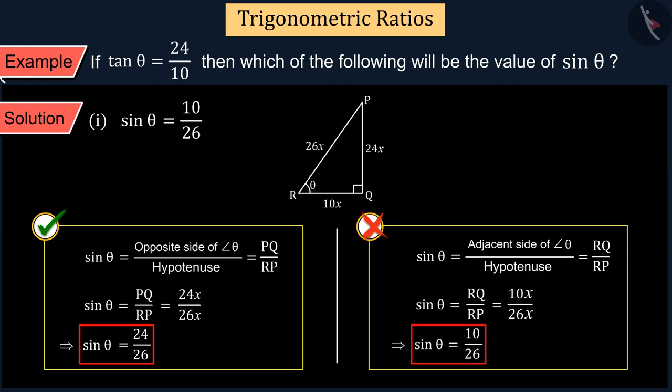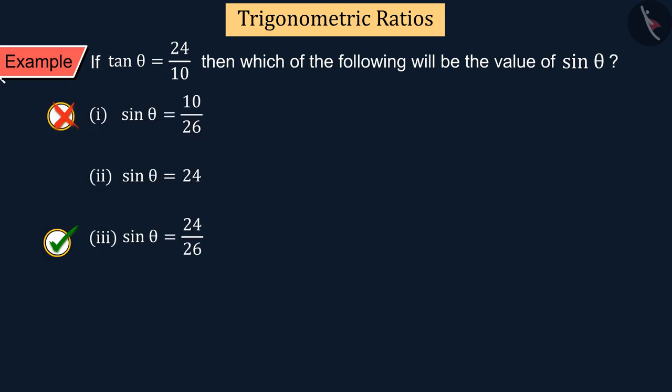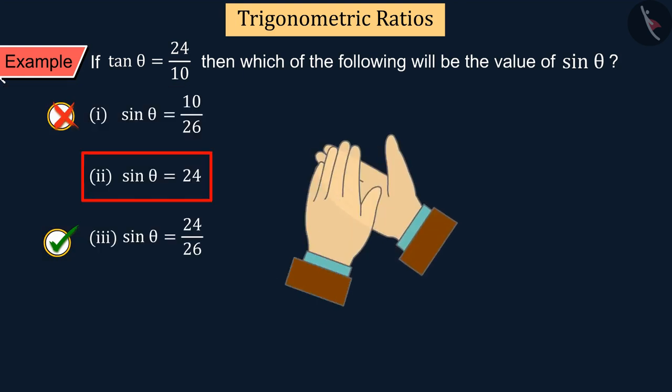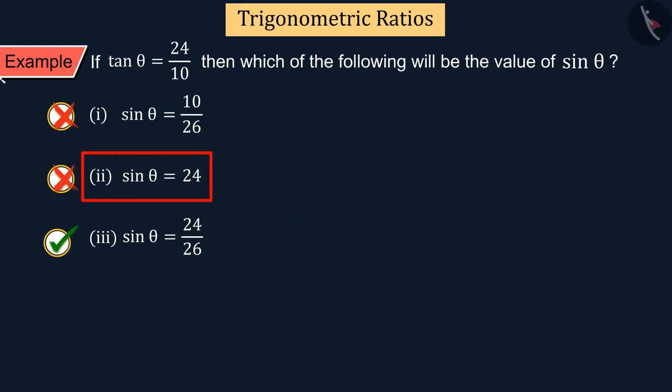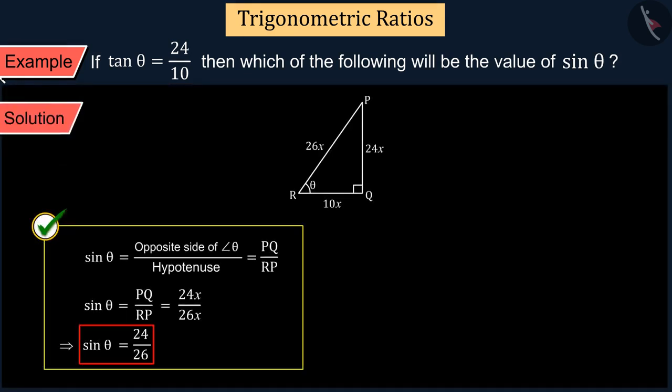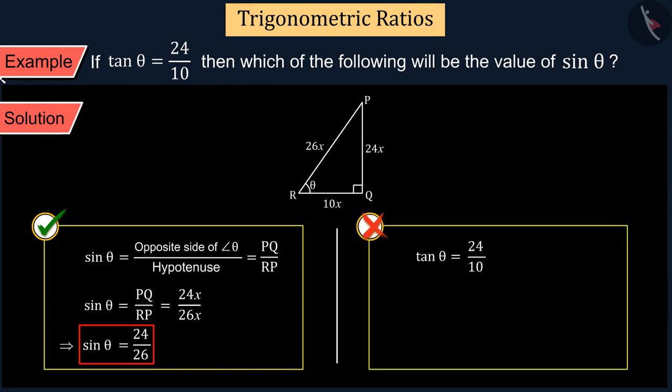If you chose option 2, it is a good try but this is also the wrong answer. This happened because in the value given in the question, you have written tan θ as sin θ upon cos θ and compared the two sides, and you got the value of sin θ as 24, which is wrong.